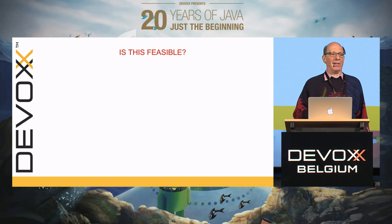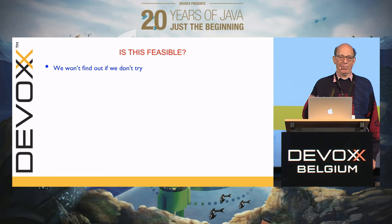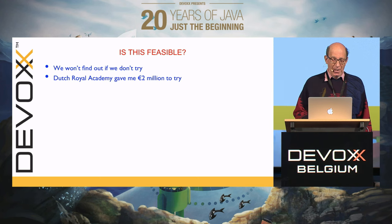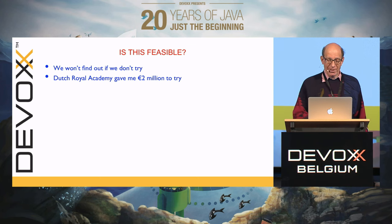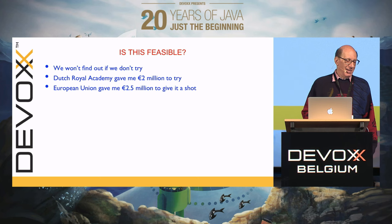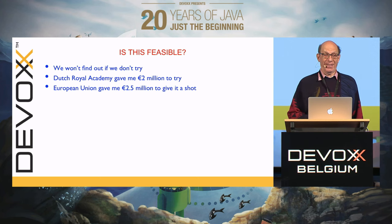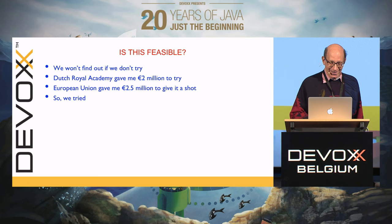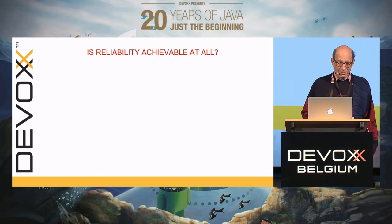Can you make software reliable? People say you can't do it — but actually I think you sort of can. And if you don't try, you won't find out. The Royal Dutch Academy of Sciences gave me 2 million euros to try, and then the European Union gave me 2.5 million euros to give it a shot. So we tried — not so sure if we succeeded, but the question is whether reliability is achievable at all.